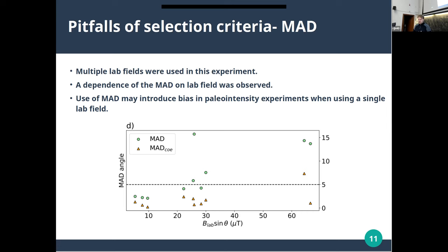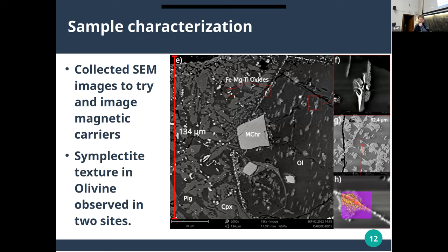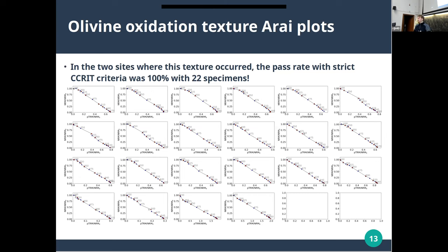A second observation is that I tried to characterize my samples by looking at SEM images, and something I found was a very interesting texture: the breakdown of olivines into a symplectite iron oxide texture, where the resulting remaining olivine is very magnesium-rich, and around it you get oxides containing iron, magnesium, and titanium — a rather odd texture. I observed this in two sites, and the Arai plots from both those sites looked very striking: basically everything is a very straight line above about 350 degrees. All 22 specimens from these two sites actually passed those really strict Cromwell criteria.